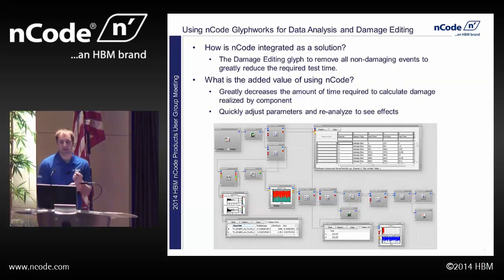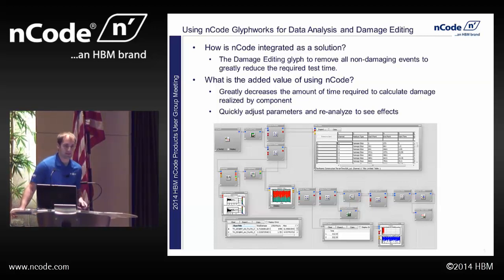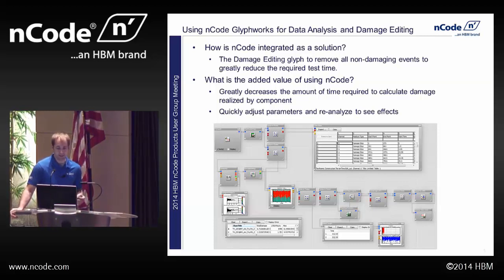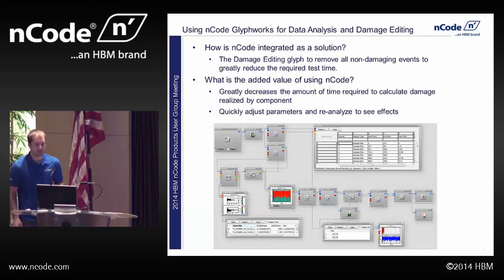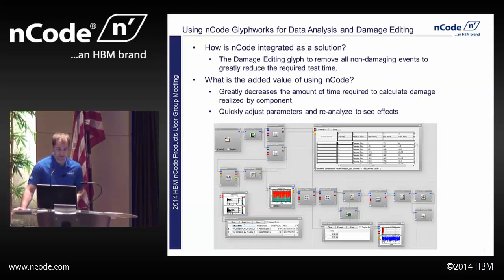How was ENCODE integrated as a solution to this problem? The damage editing glyph was the meat and potatoes of this whole thing. It allows you to remove any non-damaging events from your field data, and by doing that, you greatly reduce the required test time. The added value was that I could go in, change some parameters and settings, and quickly evaluate how those changes were going to affect the damage realized by these components. That's just a snapshot of the flow I used in order to do this.